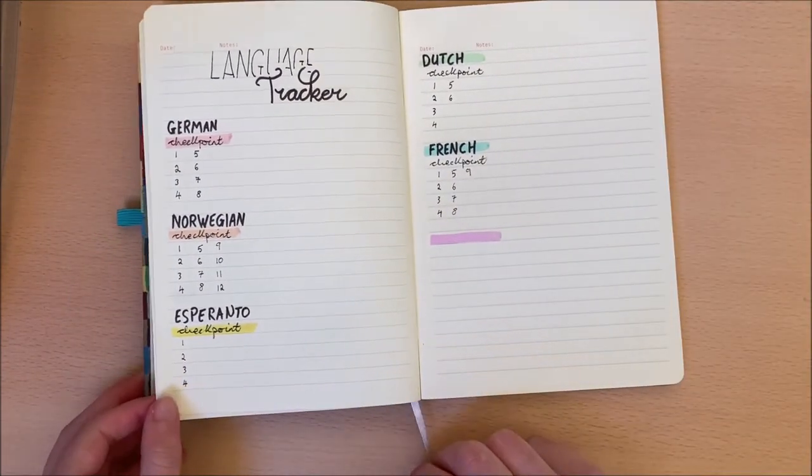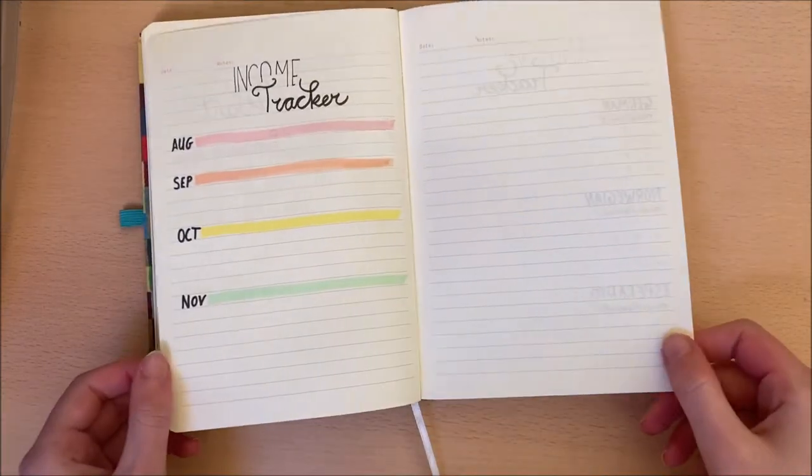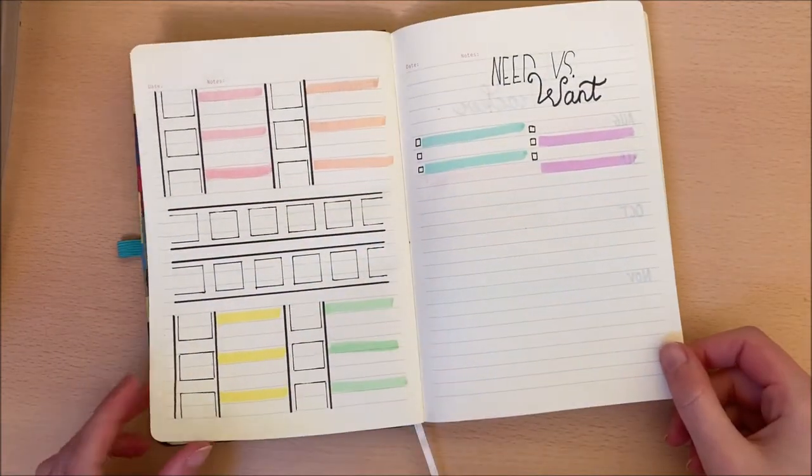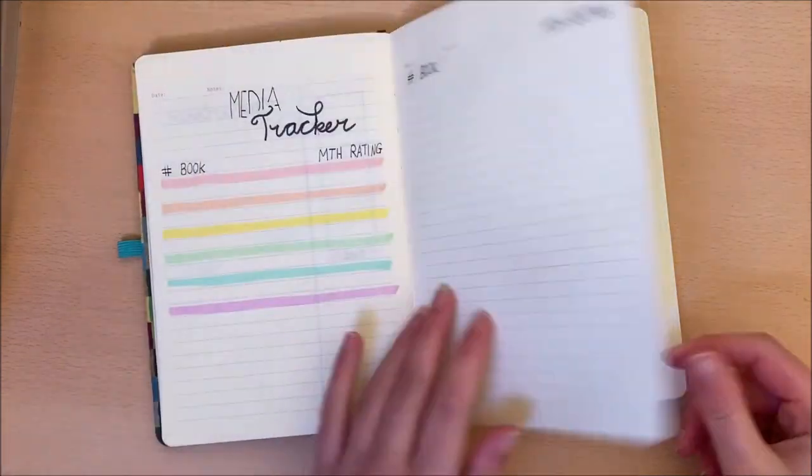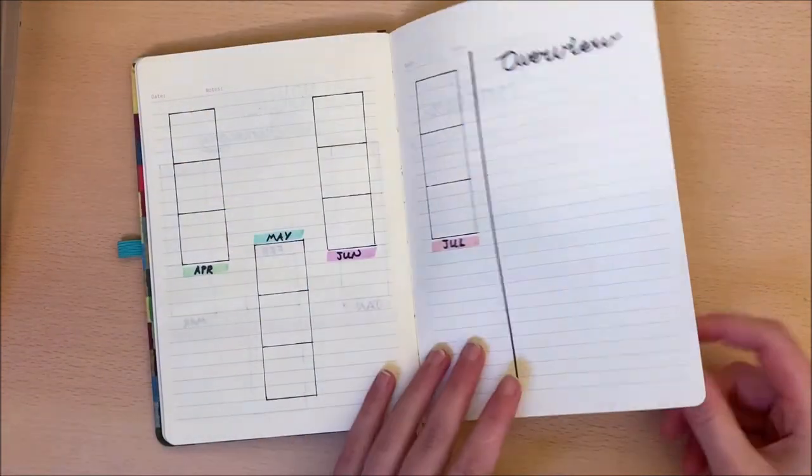So that is it for my 2021 bullet journal spread. Here is a quick flick through of what the final spreads look like and there will also be the usual images at the end.